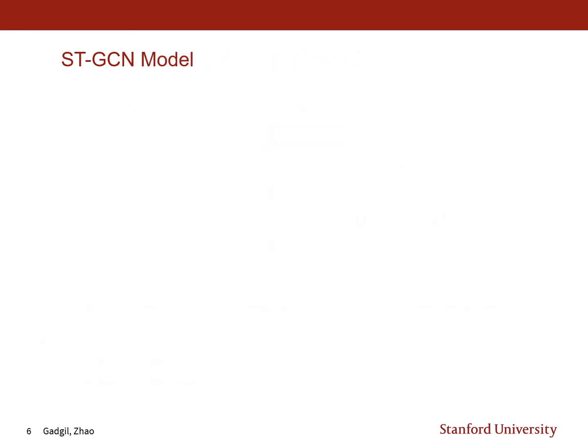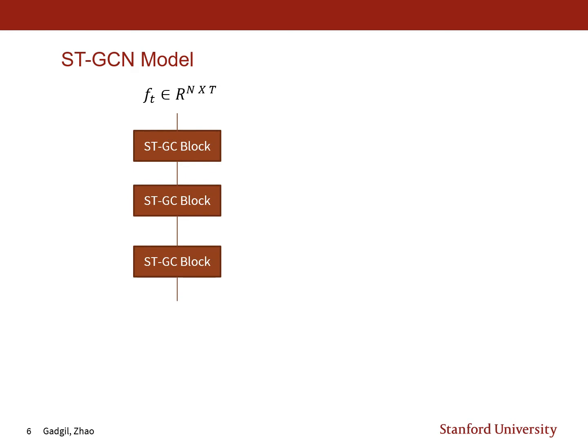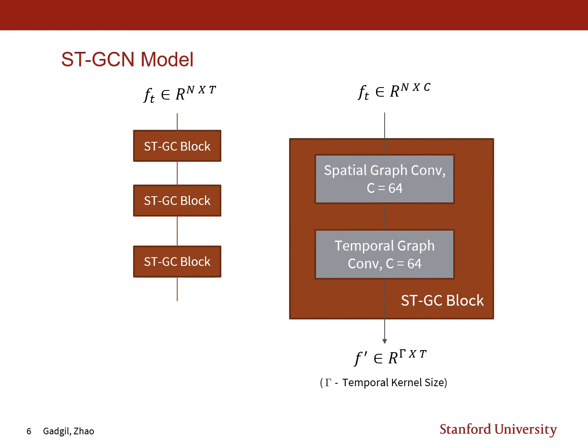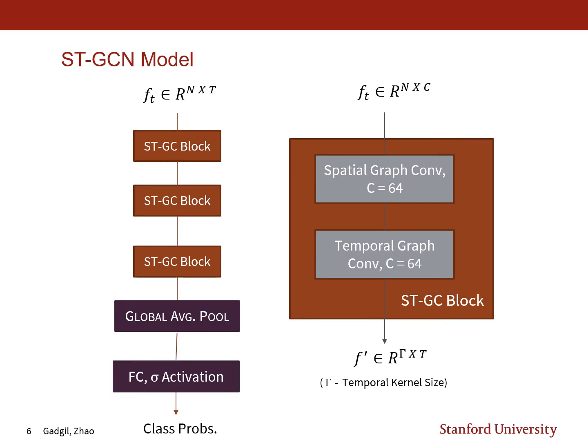The complete STGCN model consists of feeding the input features to three STGC blocks. Each block consists of a spatial graph convolution with 64 output channels followed by a temporal graph convolution again with 64 output channels. The output of the last block is then fed into a global average pooling layer followed by a fully connected layer with sigmoid activation to give the final class probabilities.